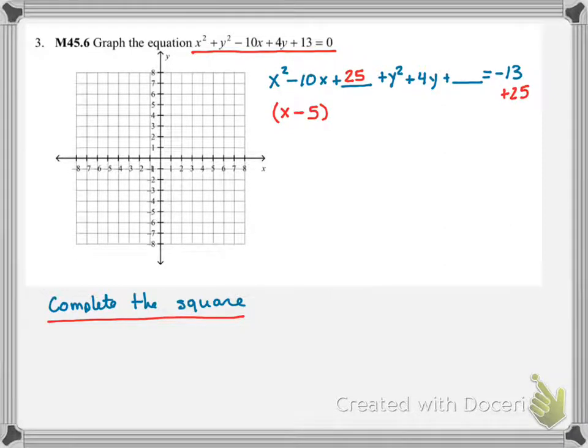As we complete the square for y, half of 4 is going to be 2. So we're going to have y plus 2 this time. Each one of these will be squared. 2 squared is 4. We've got to add 4 to both sides.